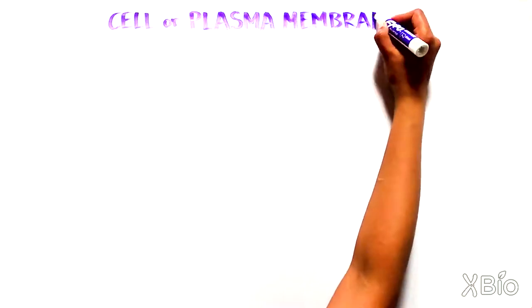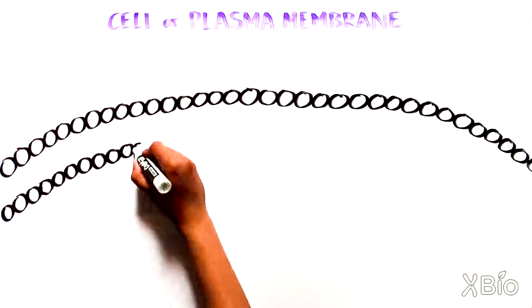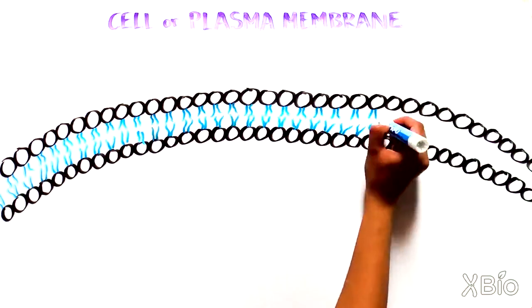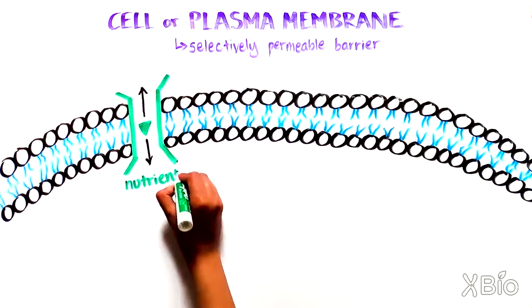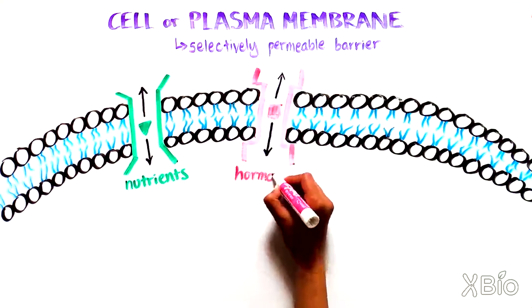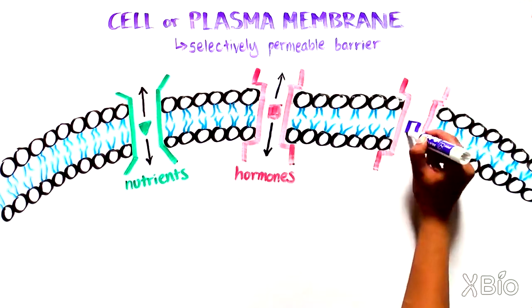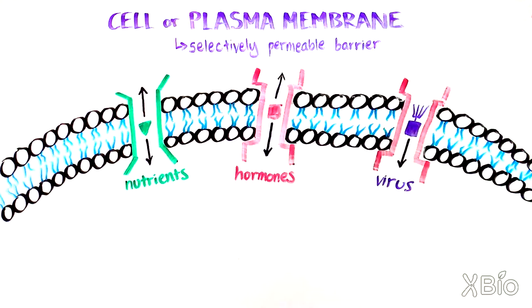Similarly, the plasma membrane, which is made up of lipids and proteins, is a selectively permeable barrier that allows only certain molecules to come in or leave. This usually means good things like nutrients and hormones, although sometimes viruses can trick the cells and enter by similar mechanisms.